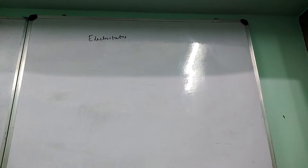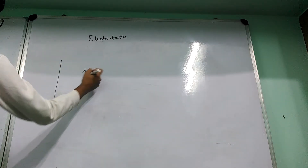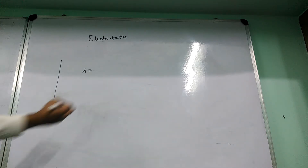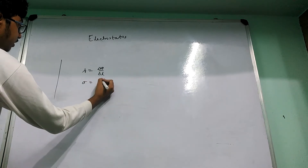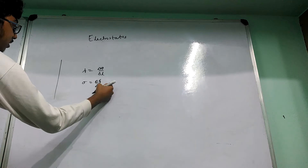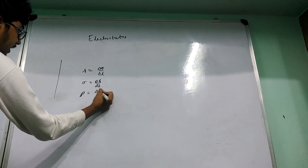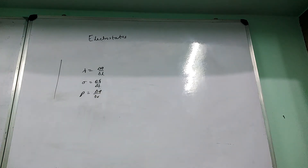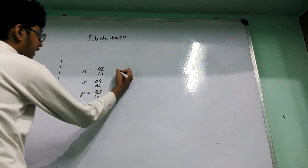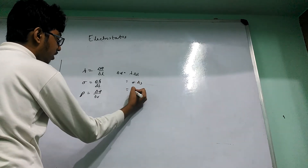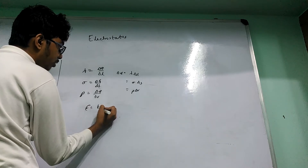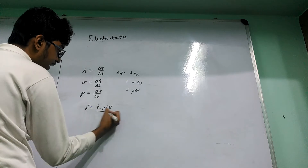Before Gauss's law, we need to understand continuous charge distribution. Charge is quantized, but at macroscopic scale we assume it is continuously distributed. For a wire, lambda is the linear charge density — charge per unit length (ΔQ/ΔL). Sigma is the surface charge density — charge per unit area (ΔQ/ΔS). For a 3D body, rho is the volume charge density — charge per unit volume (ΔQ/ΔV). The charge element can be written as lambda·ΔL, sigma·ΔS, or rho·ΔV, and the electric field contribution is K·(charge element)/R².